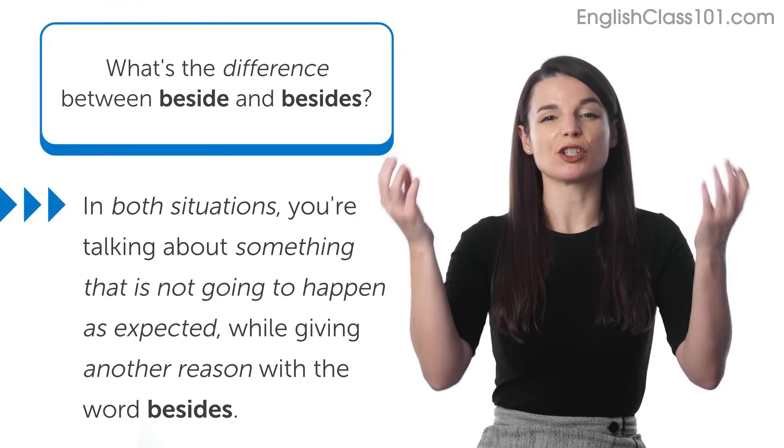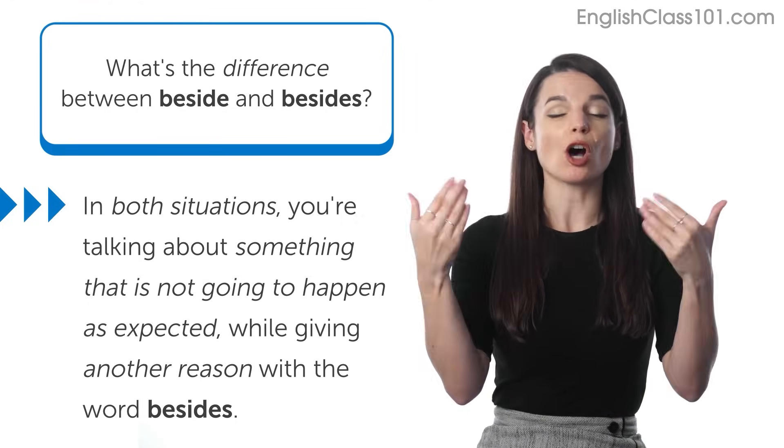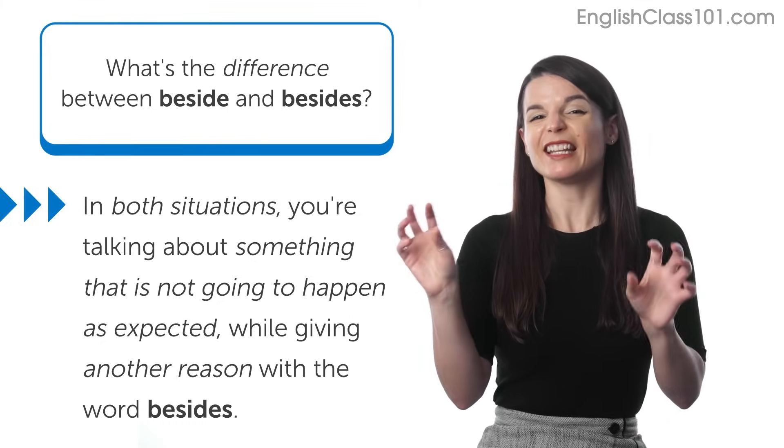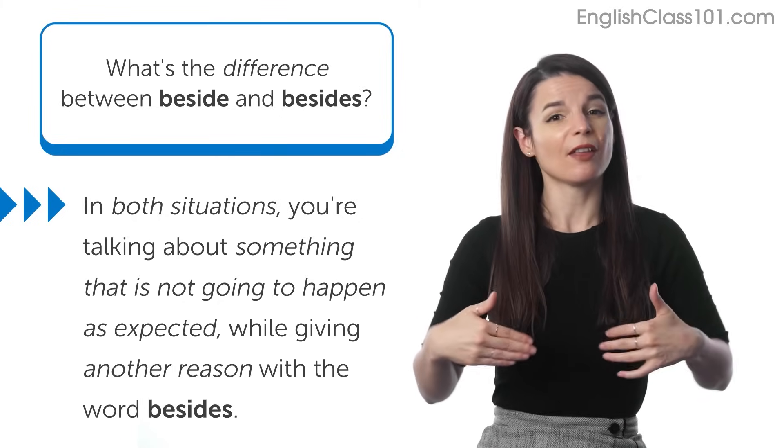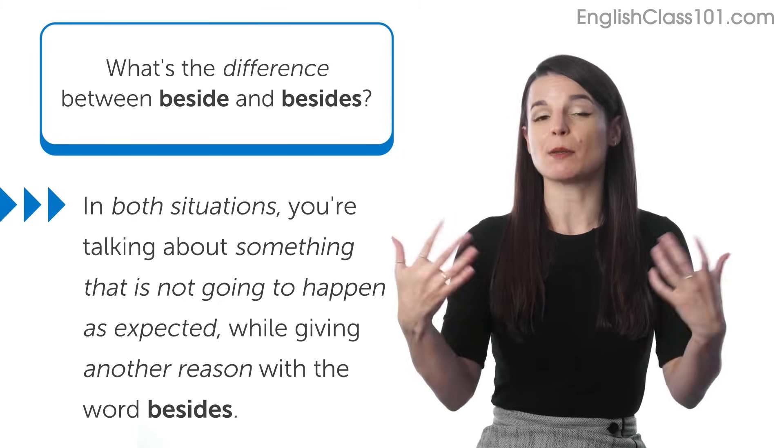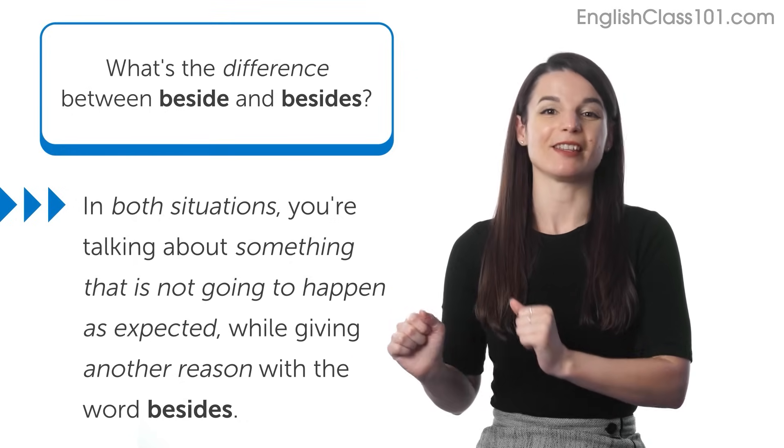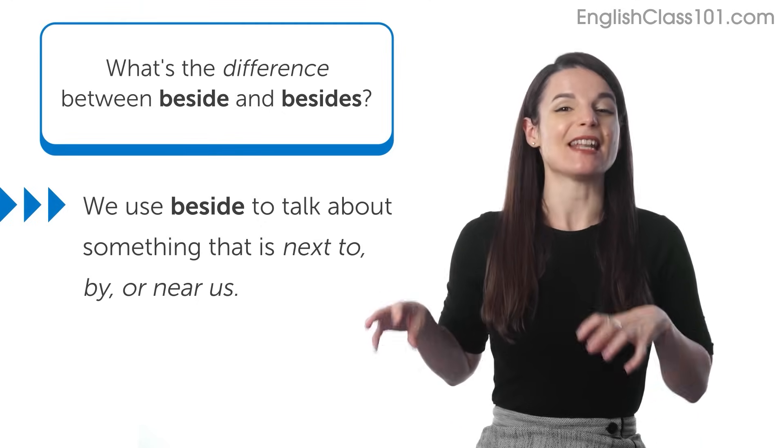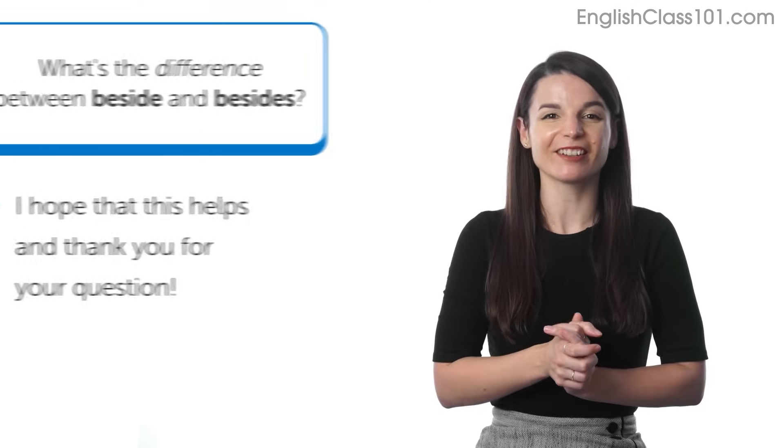So to back up means to support that opinion. So in both of these situations, you're talking about something that is not going to happen as expected. And then you're also giving another reason for that with besides, like saying, in addition to this sort of kind of uncomfortable situation or this unfortunate situation, there's this other thing that leads me to make the same decision. So this is how we use besides with an S, but we use beside with no S to talk about something that is next to or by or near us. So I hope that this answers your question. Thanks so much for sending it along.